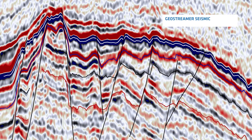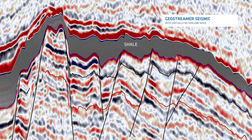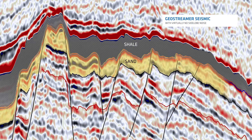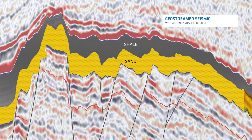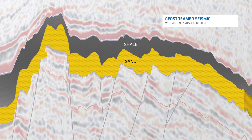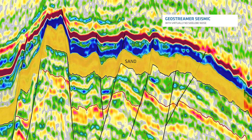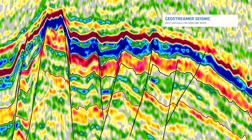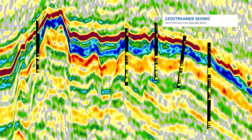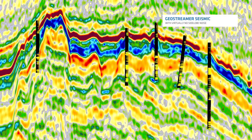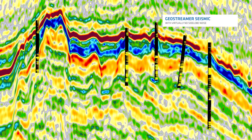Geostreamer broadband data allows easy interpretation of the base of the shale interval, and hence accurately determines the position of hydrocarbon reservoir sands beneath this shale layer. Acoustic impedance attributes computed from Geostreamer data show an excellent match between the position and thickness of the reservoir sands and the independent information extracted from borehole measurements.